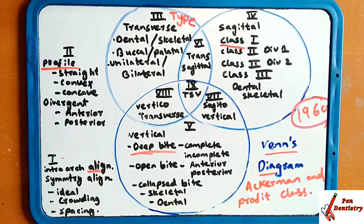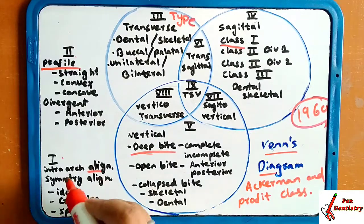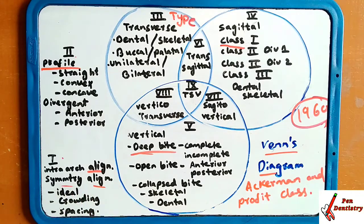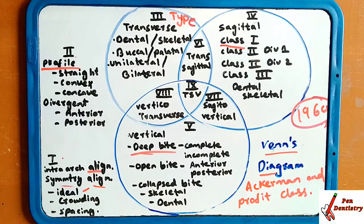Group one is alignment. In this group, alignment involves symmetry as well as intra-arch alignment. It covers whether the ideal alignment is present or whether there is spacing in the dental arch. This was given in group one.